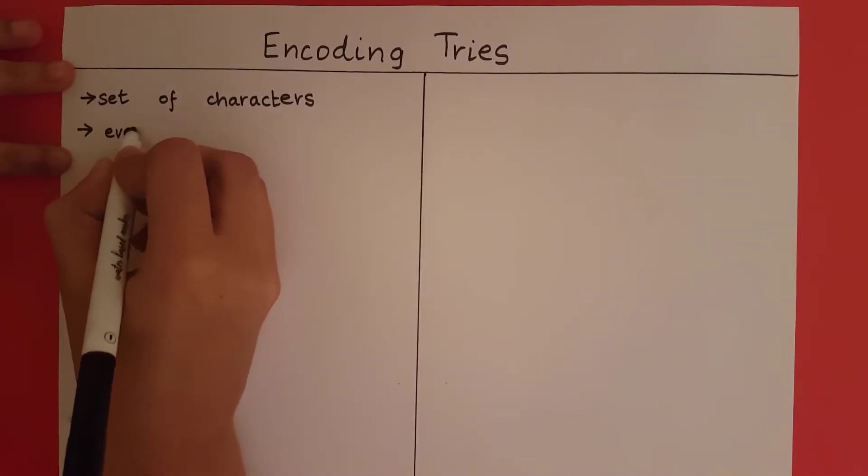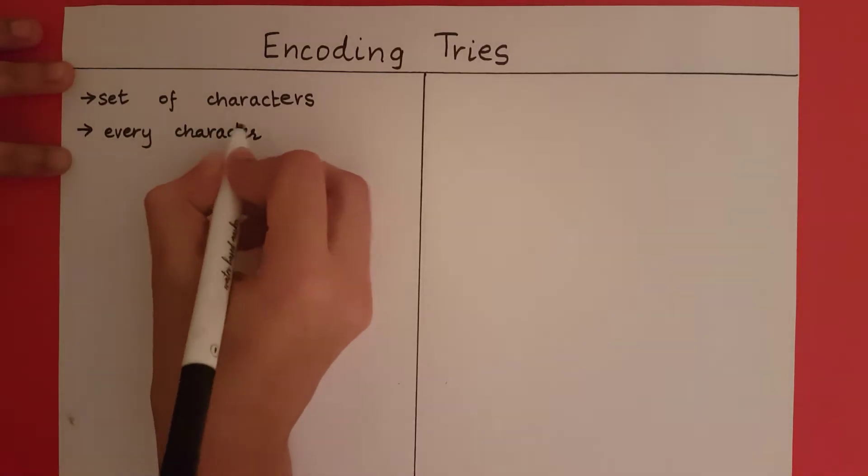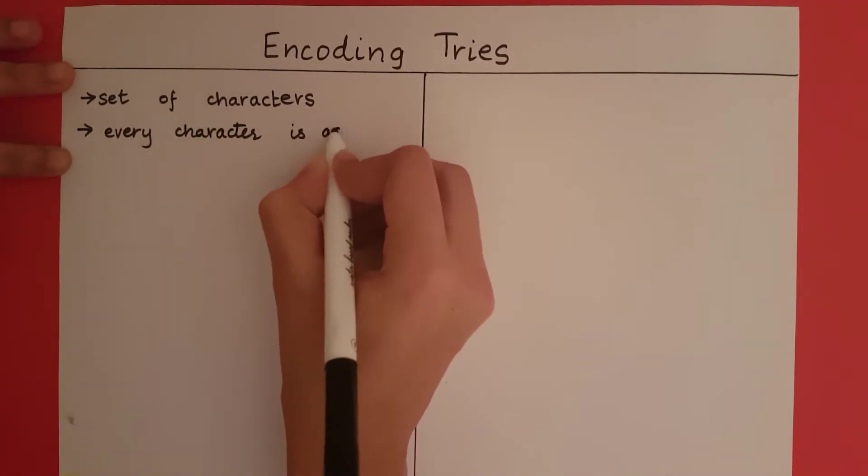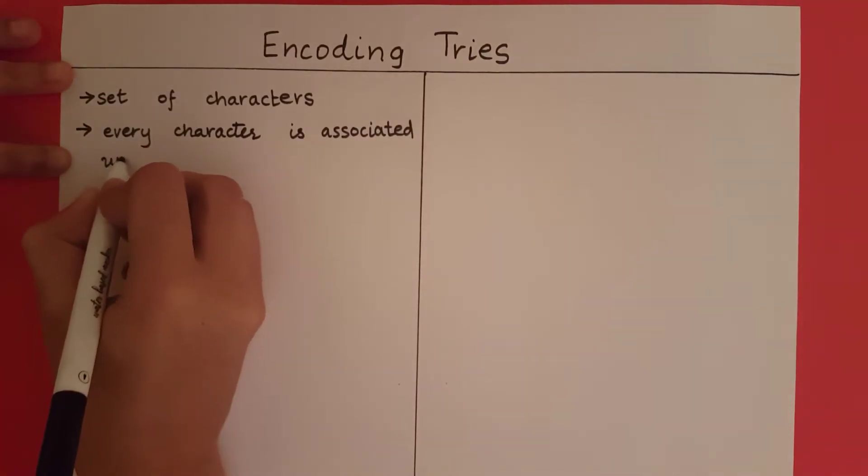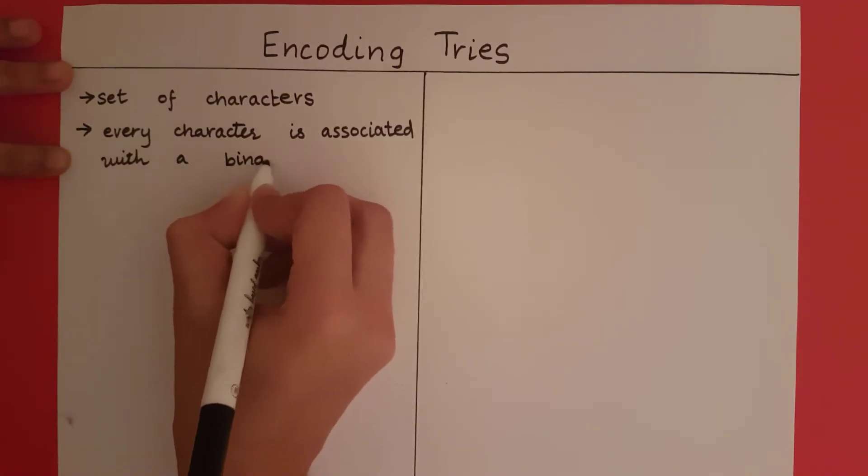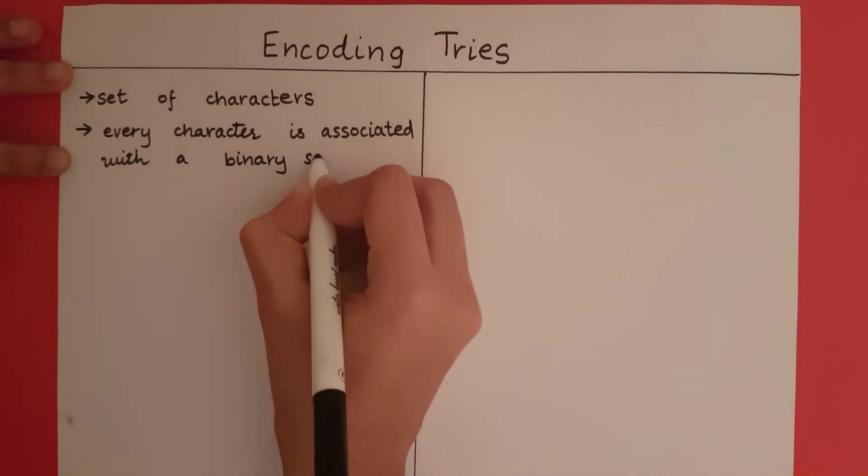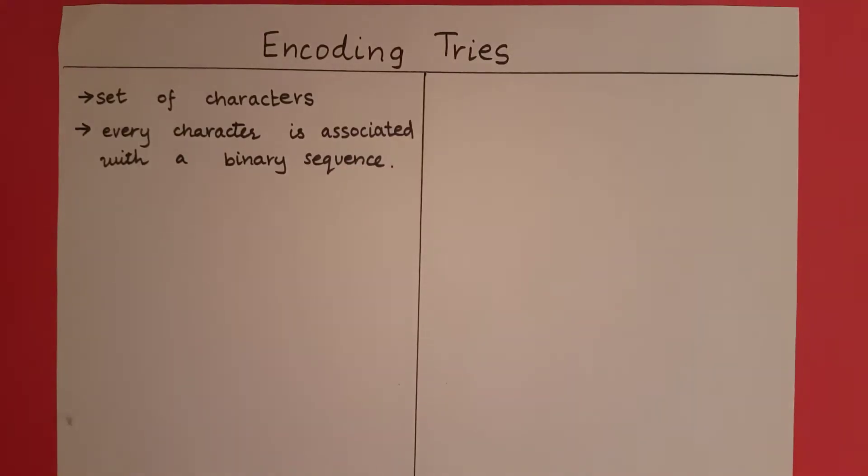So every character is associated with a binary string or sequence. Now in my trie, I not only have to represent the characters, but I also have to represent the binary sequence associated with that character.